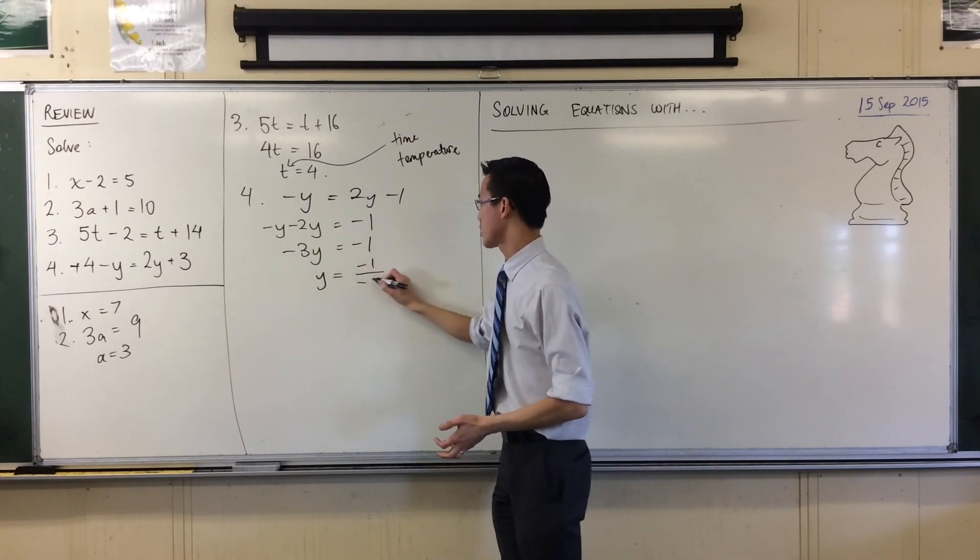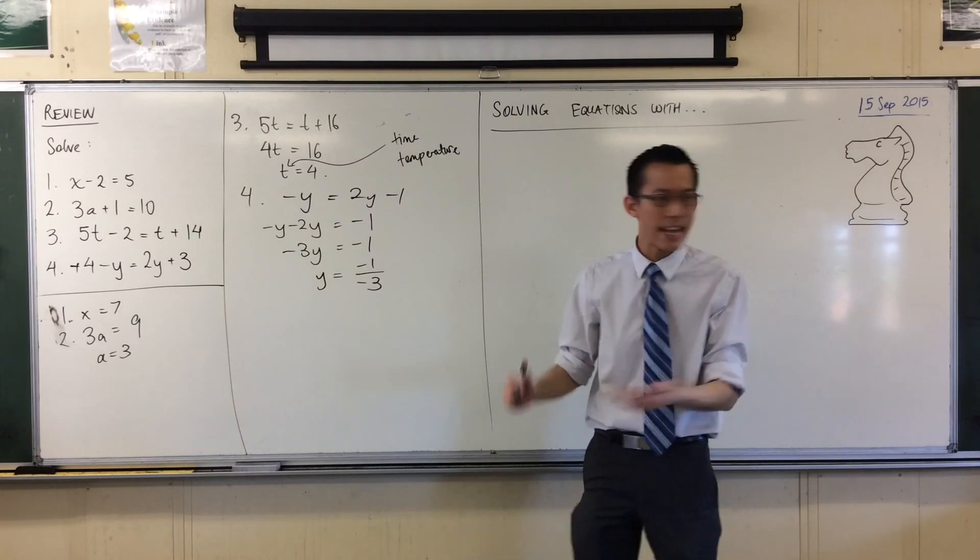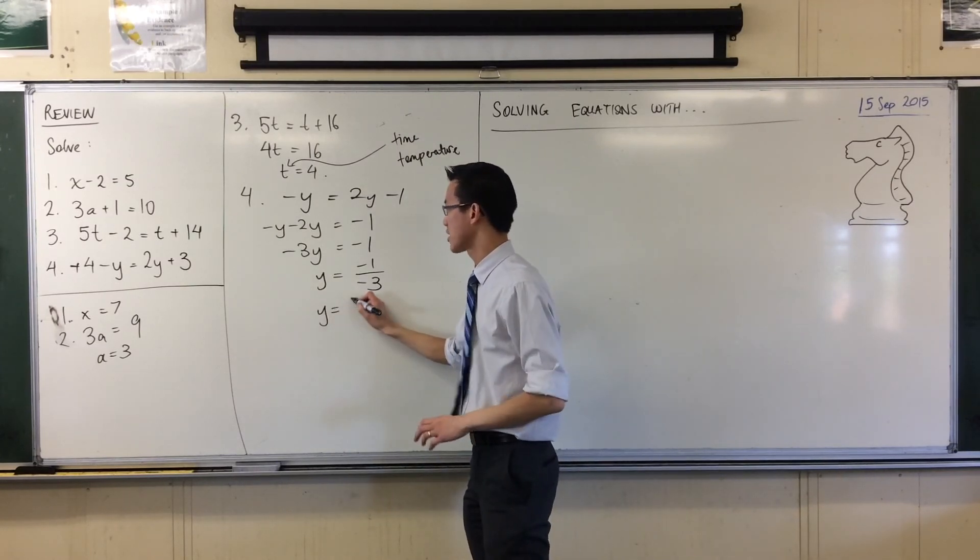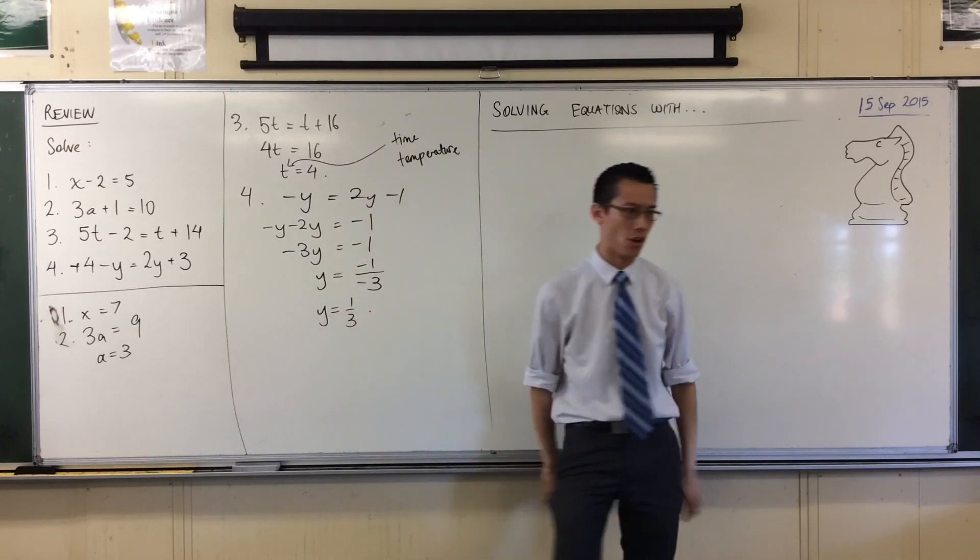So that's this, right? What happens to those negatives? They cancel each other out, right? So I just get left with y equals one-third. I don't know.